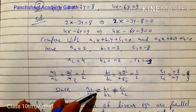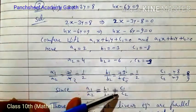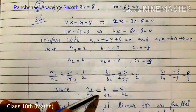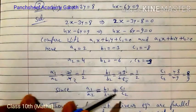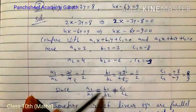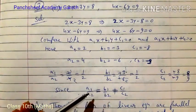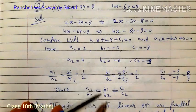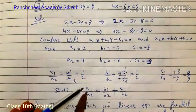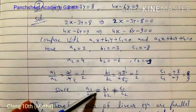Since a1/a2 = b1/b2 = 1/2, we check c1/c2. c1/c2 = -8/-9 = 8/9, which is not equal to 1/2. So a1/a2 = b1/b2 ≠ c1/c2. This is the case of no solution — parallel lines.